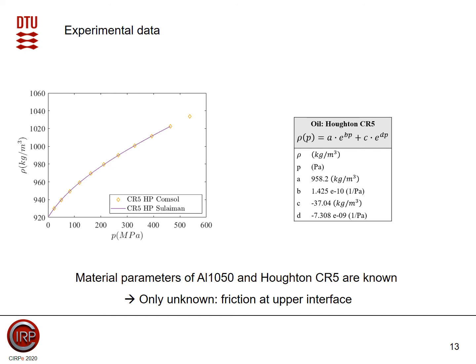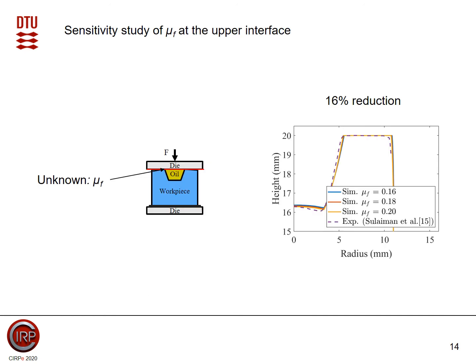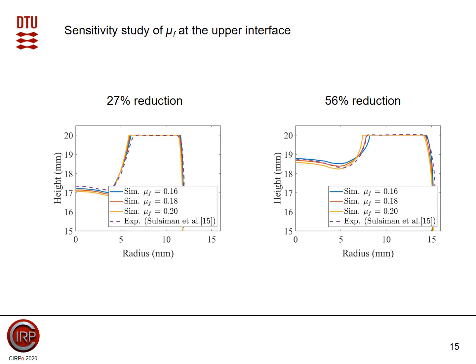We know the friction because there is a Teflon sheet between the lower die and the workpiece. However, we have no information about the friction between the upper die and the workpiece, essentially along this red line. So we conducted a sensitivity analysis and varied the coefficient of friction. At 60% reduction, the results are relatively similar across values. At 27% reduction, we see a similar trend. However, at 56% reduction, we see that if the friction coefficient is too low, the billet glides — the upper edge glides too far out — and if the friction is too high, the metal cannot glide far enough. We found that 0.18 is right on spot.